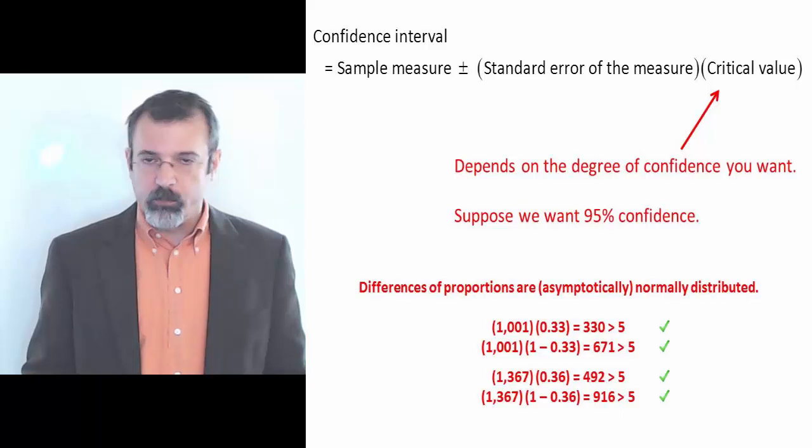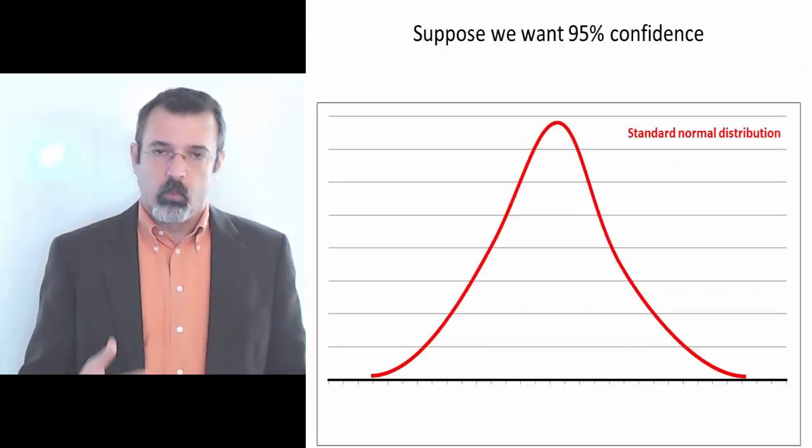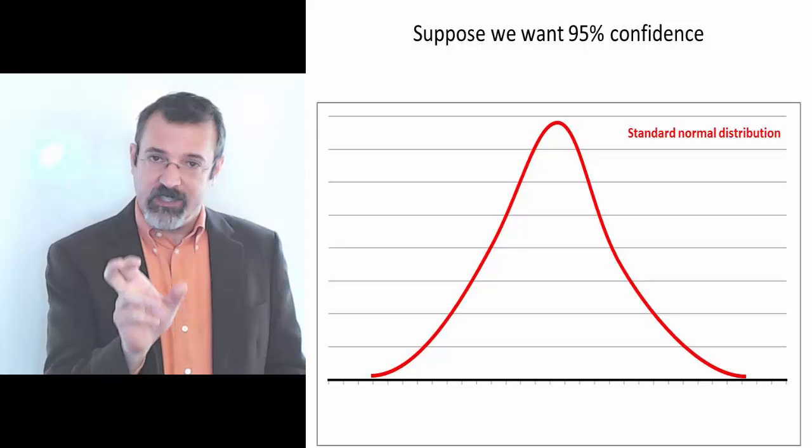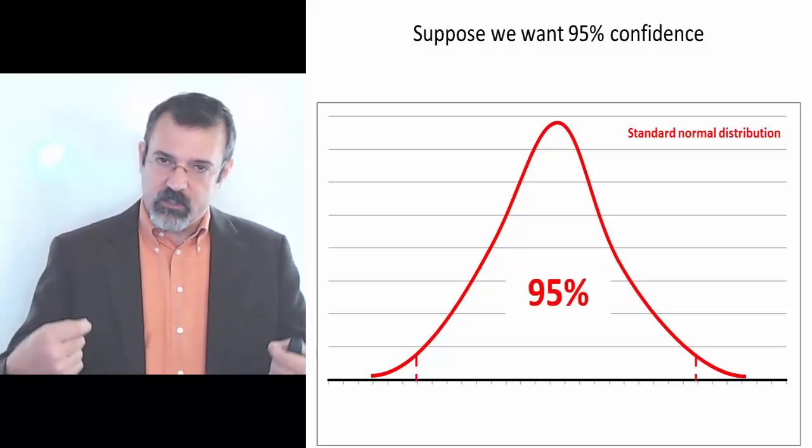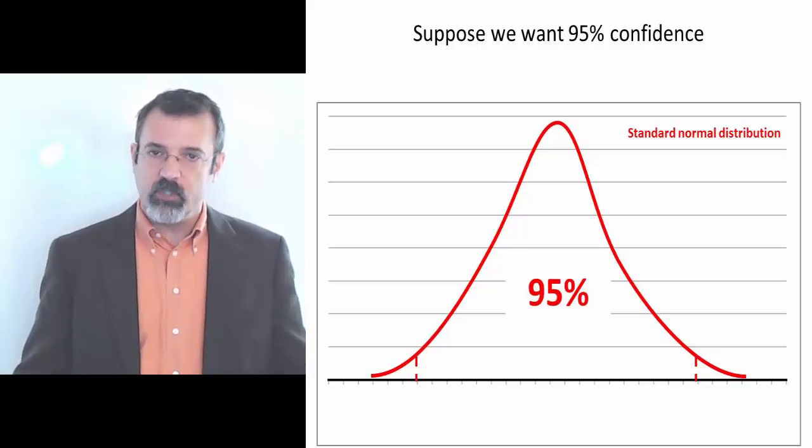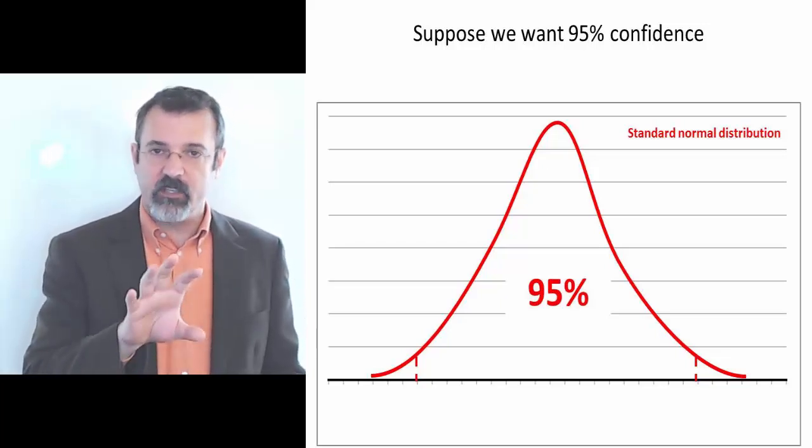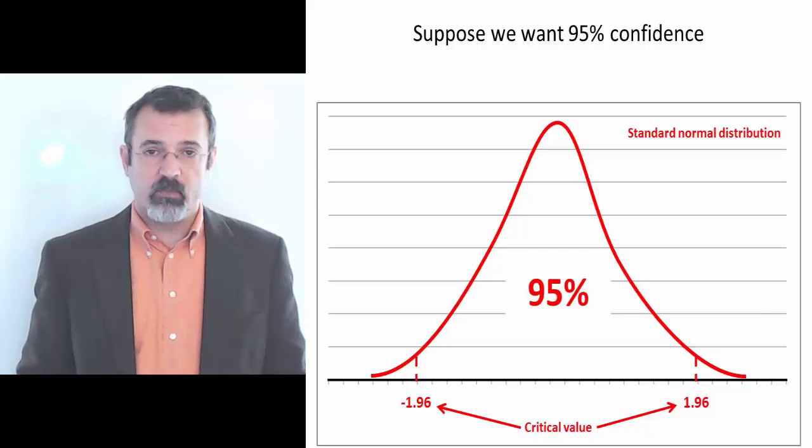So the difference in sample proportions is normally distributed. We're looking for the area in the normal distribution that has 95% in the center. The critical value is the number that divides our normal distribution so that we have 95% in the center. In this case, it's plus or minus 1.96.